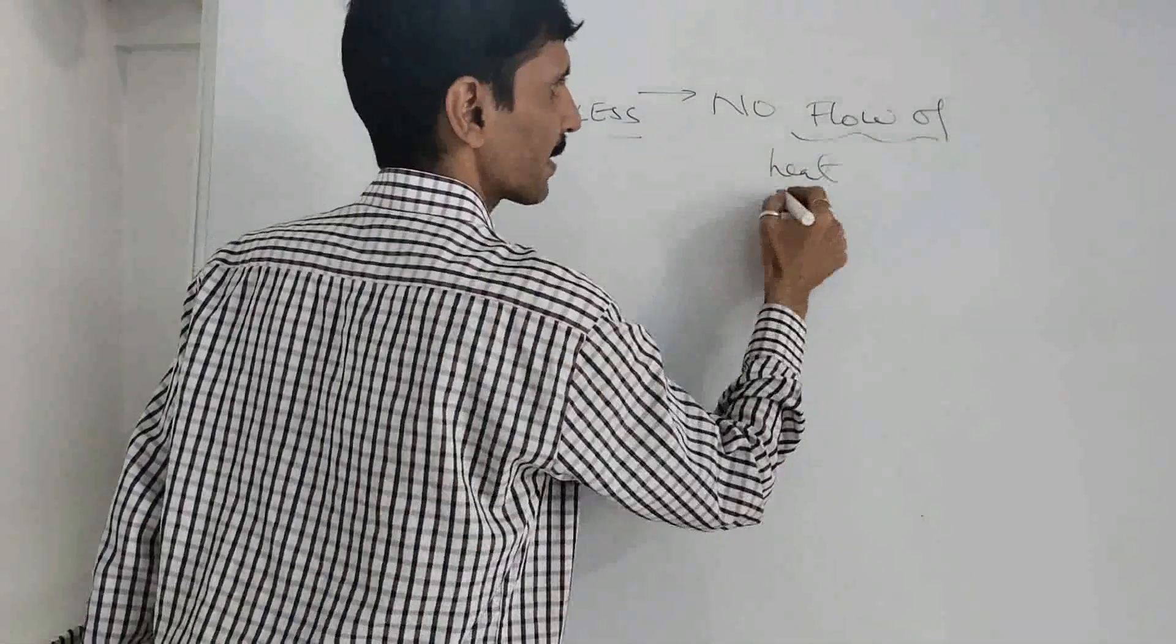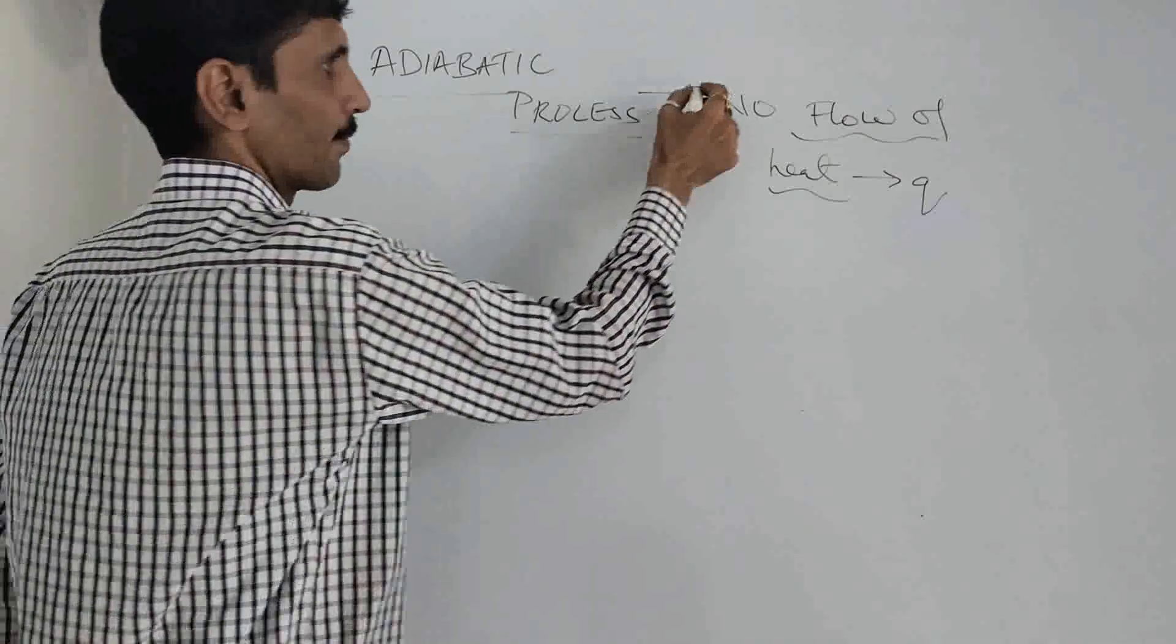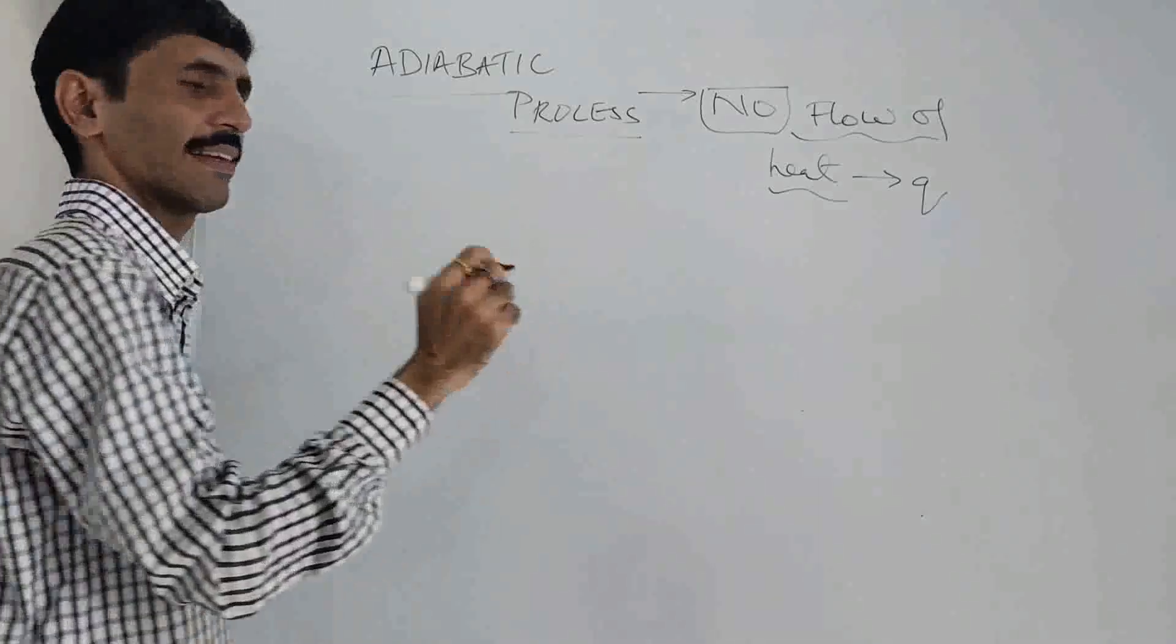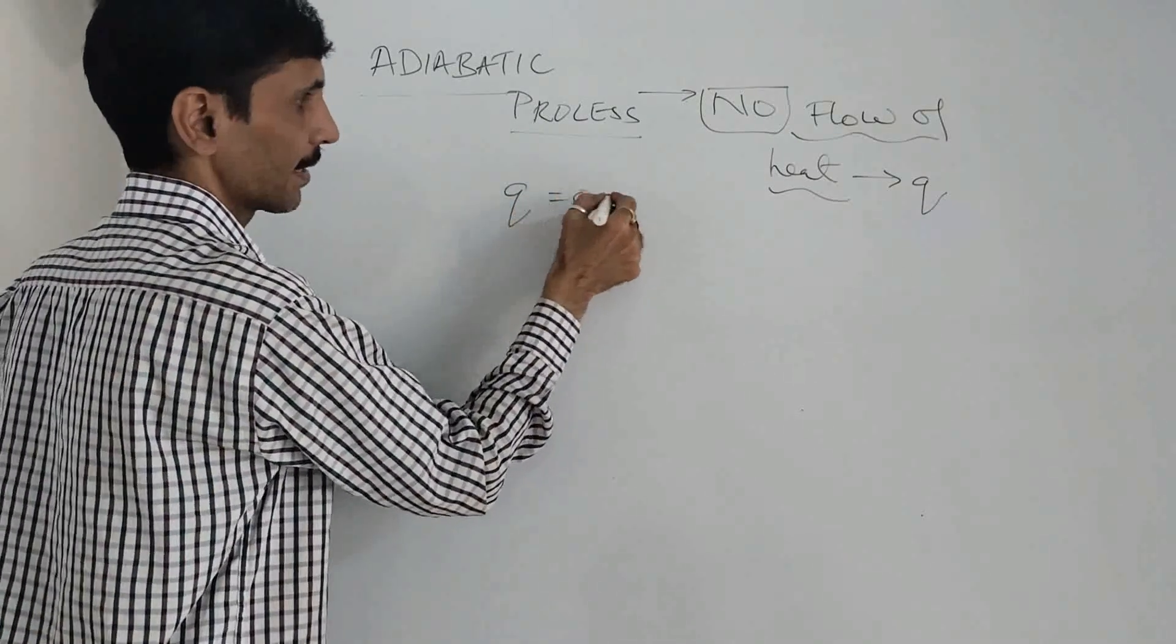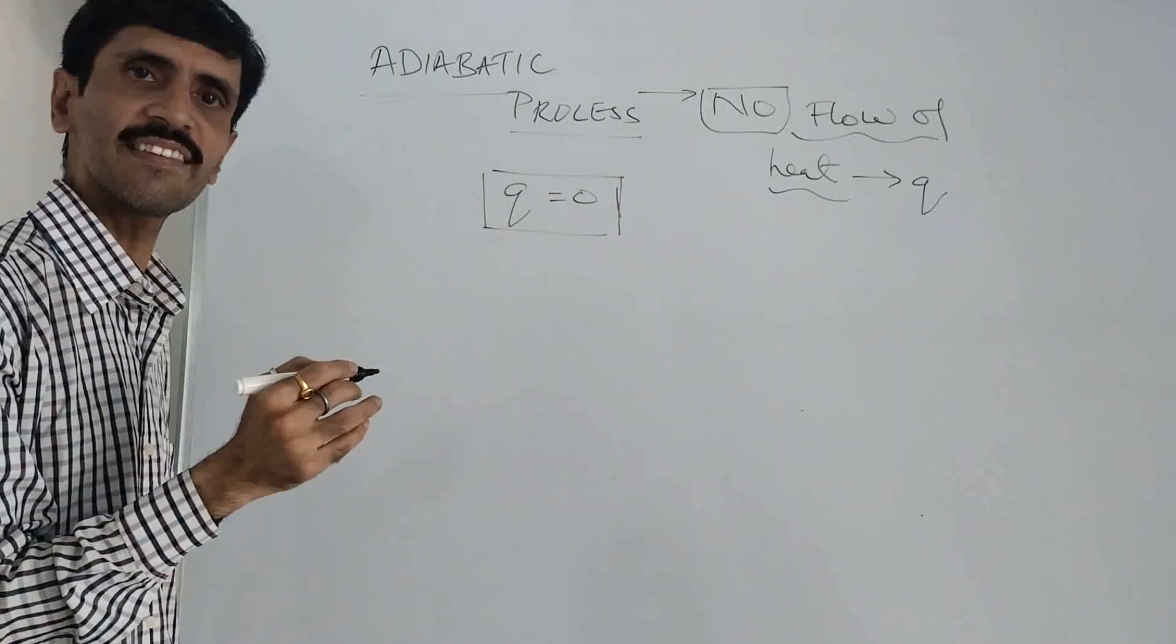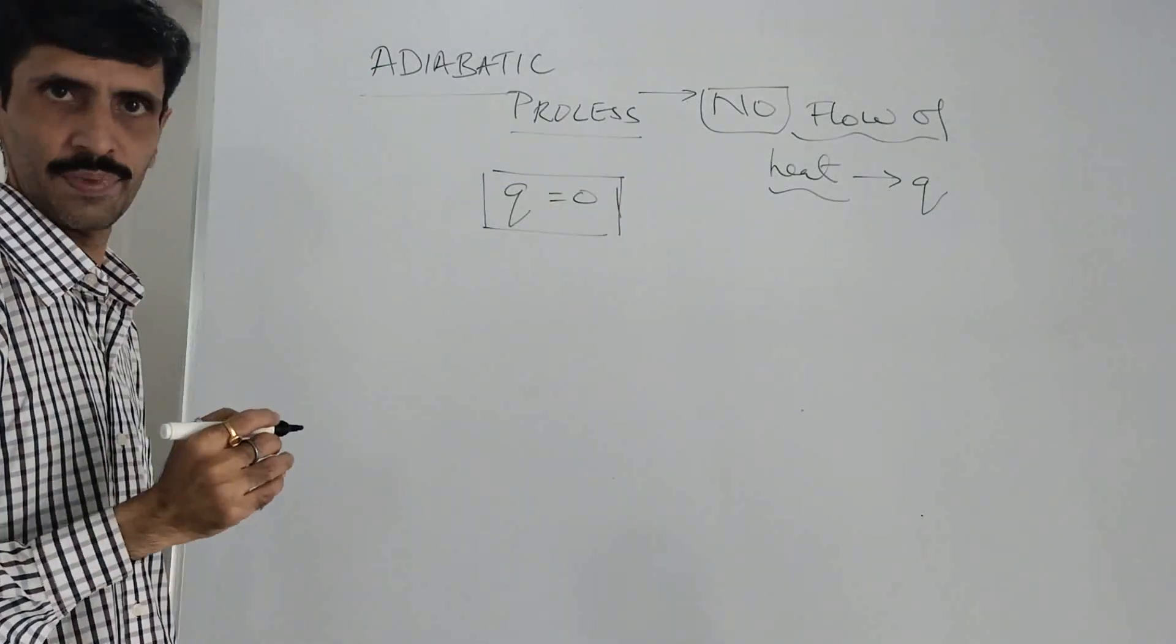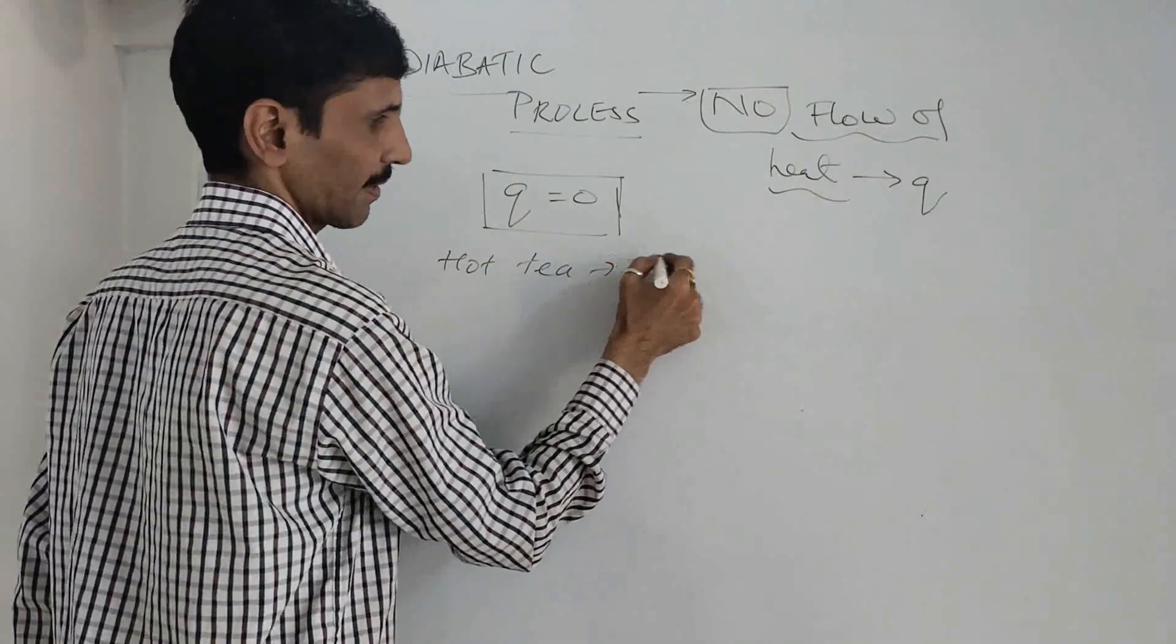Now, when we talk about flow of heat, the symbol is Q and when I am using the word no, that means it does not have any value. And when it does not have any value, it means the mathematical expression becomes very simple and that is Q is equal to zero. The best example is hot tea stored in a thermos flask.